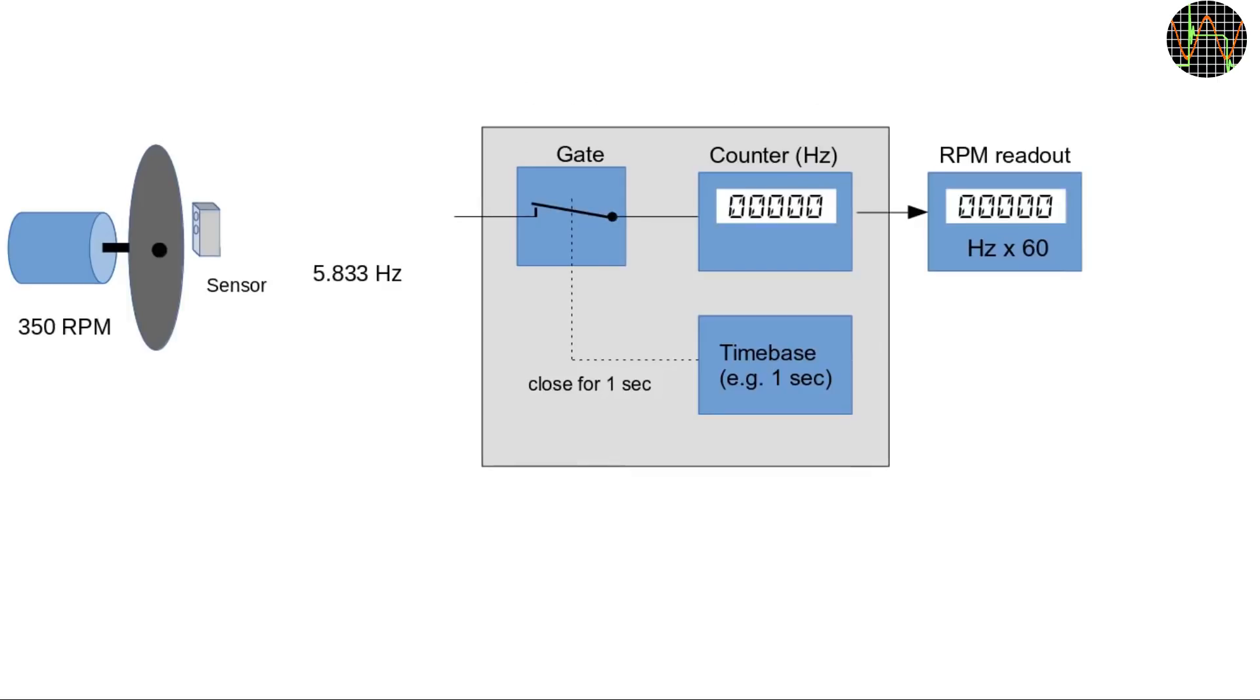Most frequency counters implement multiple time base values and usually some auto ranging to select the one giving the best resolution. So far so good, but what if you want to measure rather low frequencies such as generated by a sensor creating a pulse for every rotation of a motor. In this example, the motor is turning at 350 RPM which generates a pulse train with a frequency of 5.833 Hz. The frequency counter with a gate time of 1 second will count exactly 5 pulses. The gate closes just before the 6th pulse could have been registered. We could convert the 5 Hz to an RPM readout by multiplying the frequency by 60 and see of course 300 RPM.